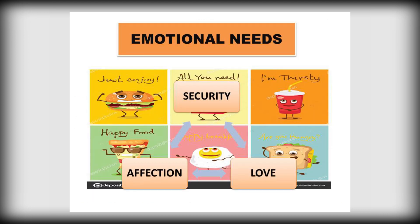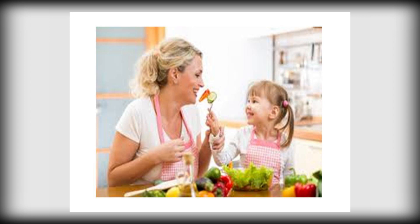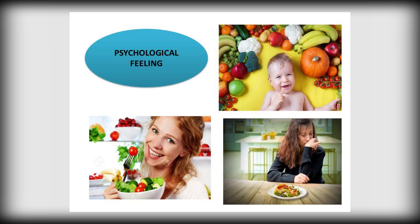Psychological function: we all have emotional needs such as the need for security, love, and affection. Food is one way through which these needs are satisfied. For example, how do you feel when your mother prepares your favorite food or dish? You feel that she loves you and cares for you. Similarly, certain foods become associated with sickness.